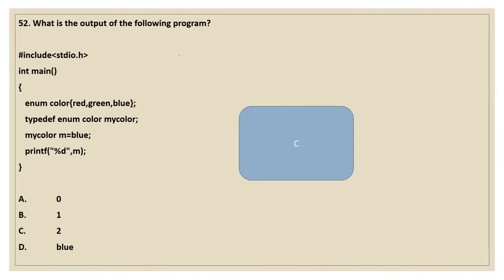Moving on to the next question. What is the output of the following program? hash include stdio.h, int main, open curly. enum color { red, green, blue }. typedef enum color mycolor. mycolor m equals blue. Print m. We know the typedef concept — giving a new name for the existing data type — and the enum concept, which is used for creating our own data type and giving values. Enum will give values starting from 0 by default, so red is 0, green is 1, and blue is allocated value 2. Since we are printing the value of m which is blue, the answer is C — 2.